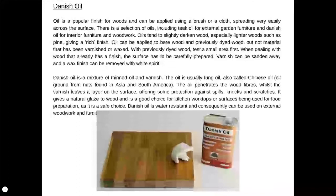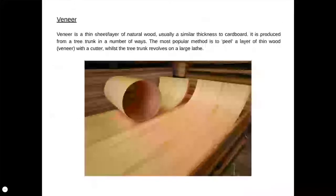You can also use Danish oil, which is used primarily on outdoor furniture such as garden benches and tables. It's very easy to apply because it's a liquid — it can be applied through a brush or a cloth. There is a great selection of oils, including teak oil, which is ideal for garden furniture. Oils tend to slightly darken the wood, especially light wood like pine, giving it a really rich, dark finish.